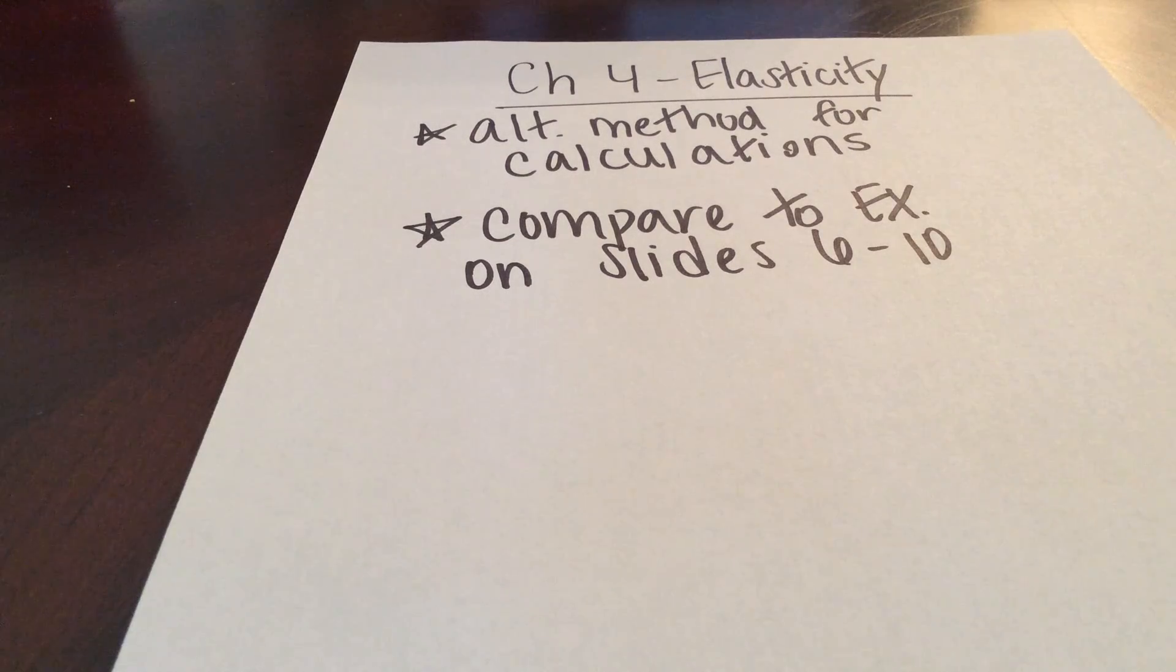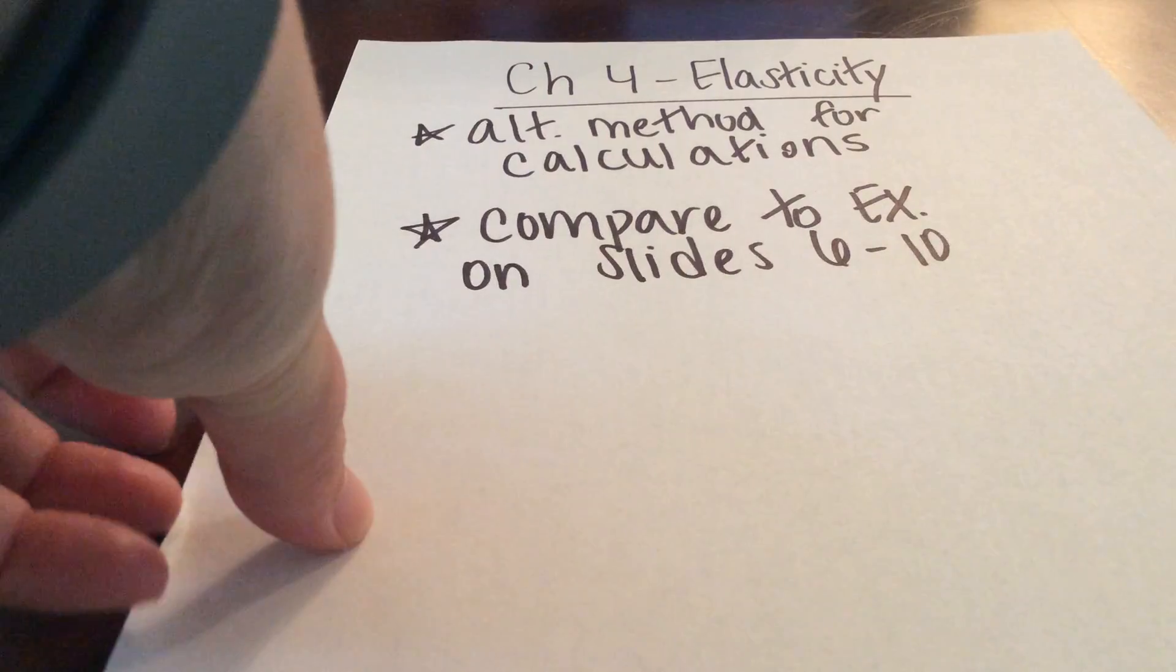This is an alternative method for calculating your price elasticity, and to see how it's different, I want you to compare this to the pizza example on Slides 6 through 10. I'm going to use those same numbers.